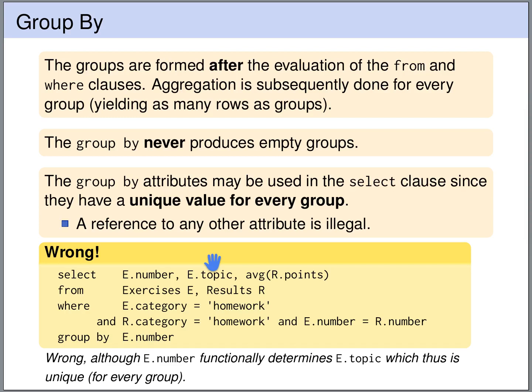Note that we are only looking at homework exercises, so the NUMBER of the homework uniquely determines the topic. If I tell you that we are looking at homework 2, you know exactly what topic we are talking about. So in principle the topic is unique for each group. However, SQL cannot check this syntactically from this query. So to give SQL a hint, we have to include the topic also in the attributes of the GROUP BY, even though this will not change the groups. Some database management systems will accept the original query, but this is not allowed by the SQL standard, so it's better to include the topic in the GROUP BY.